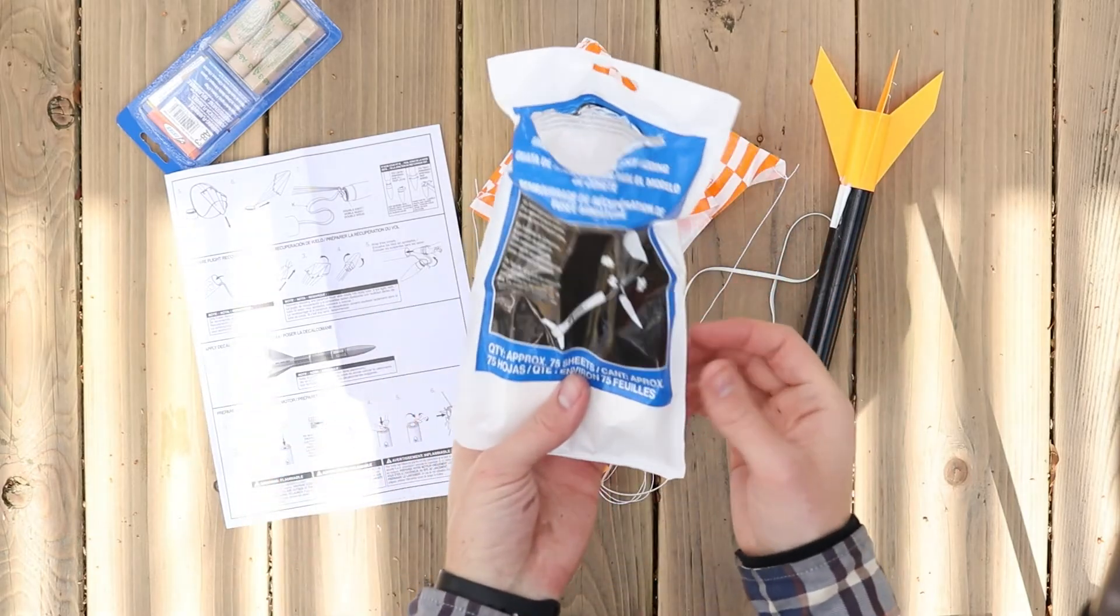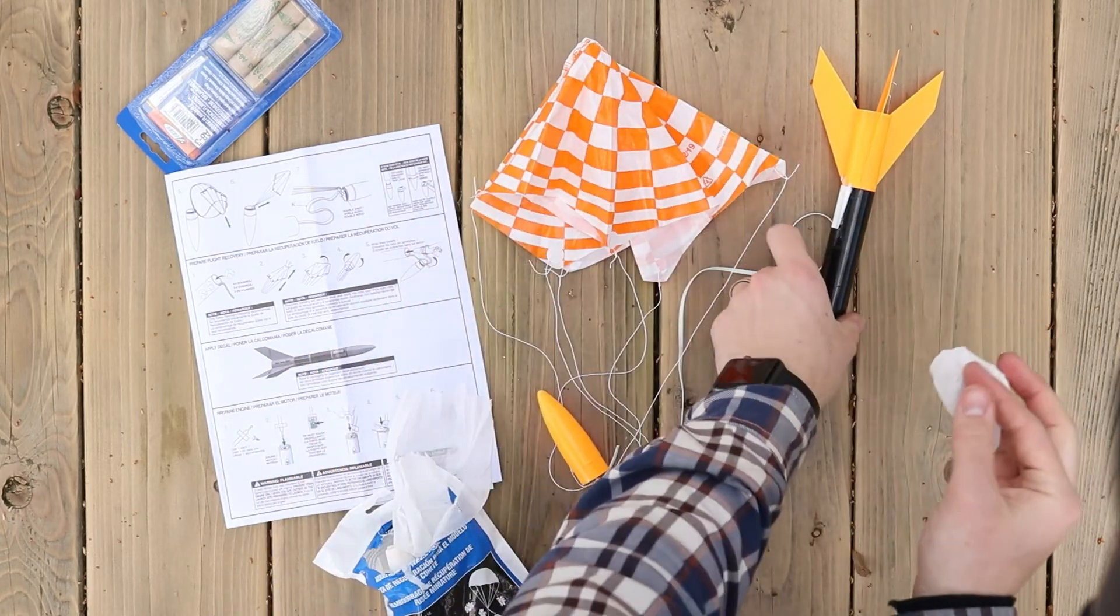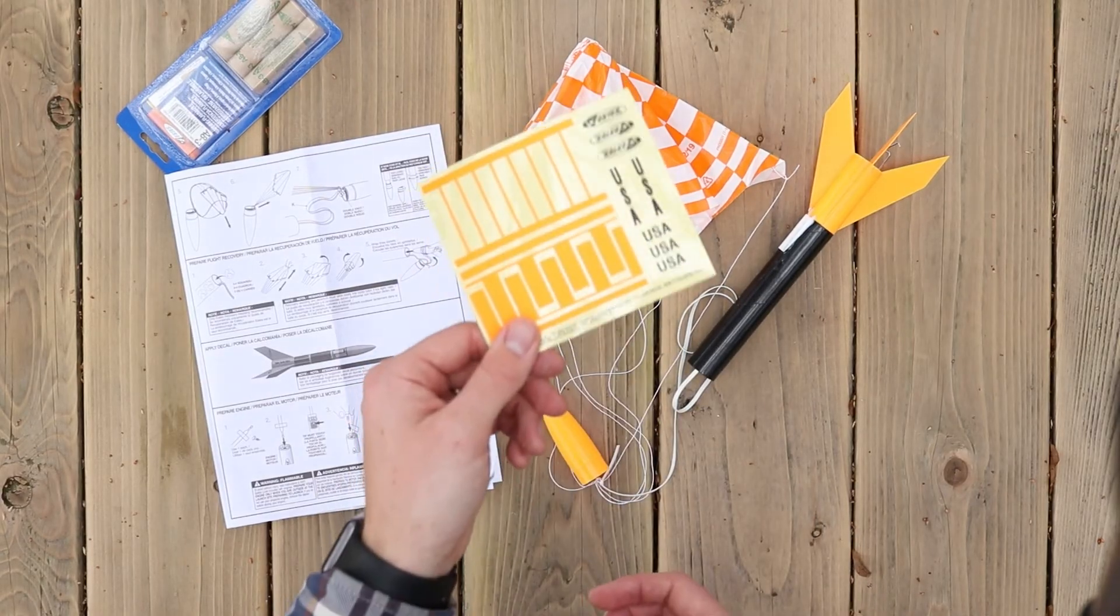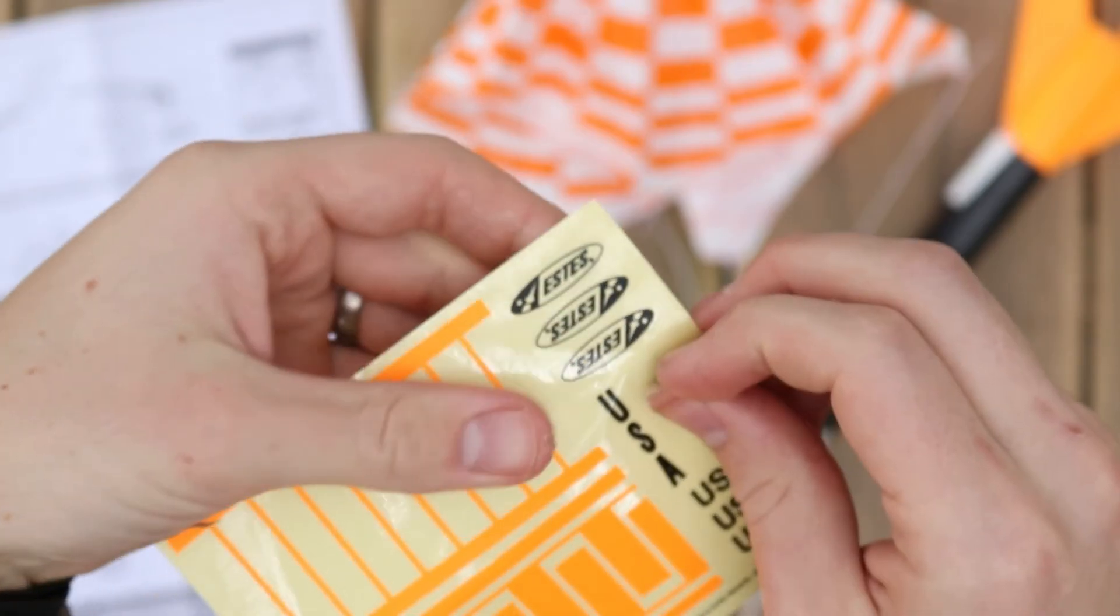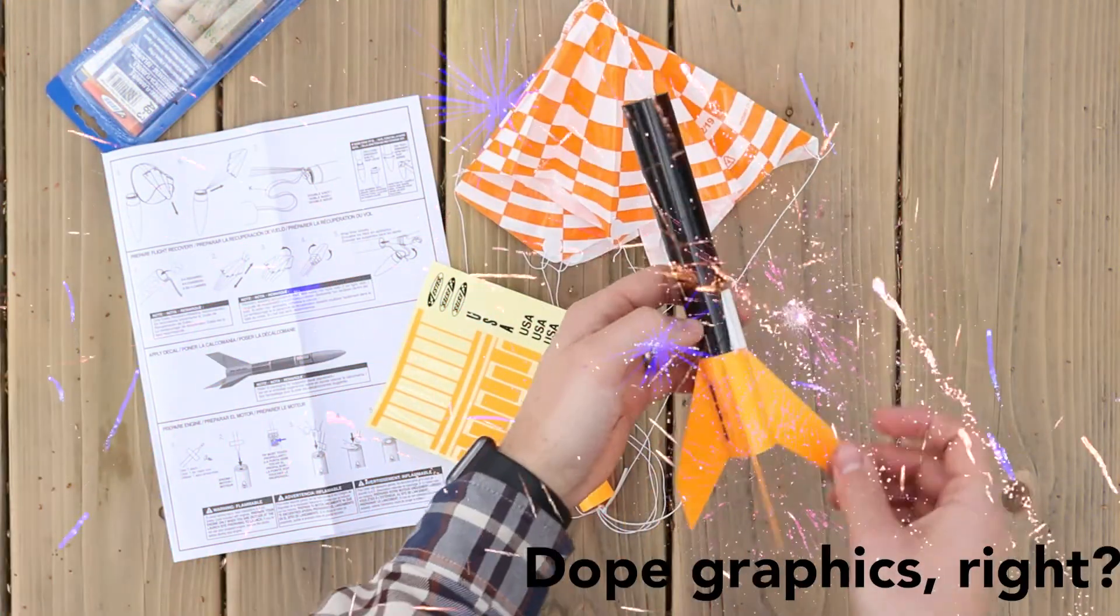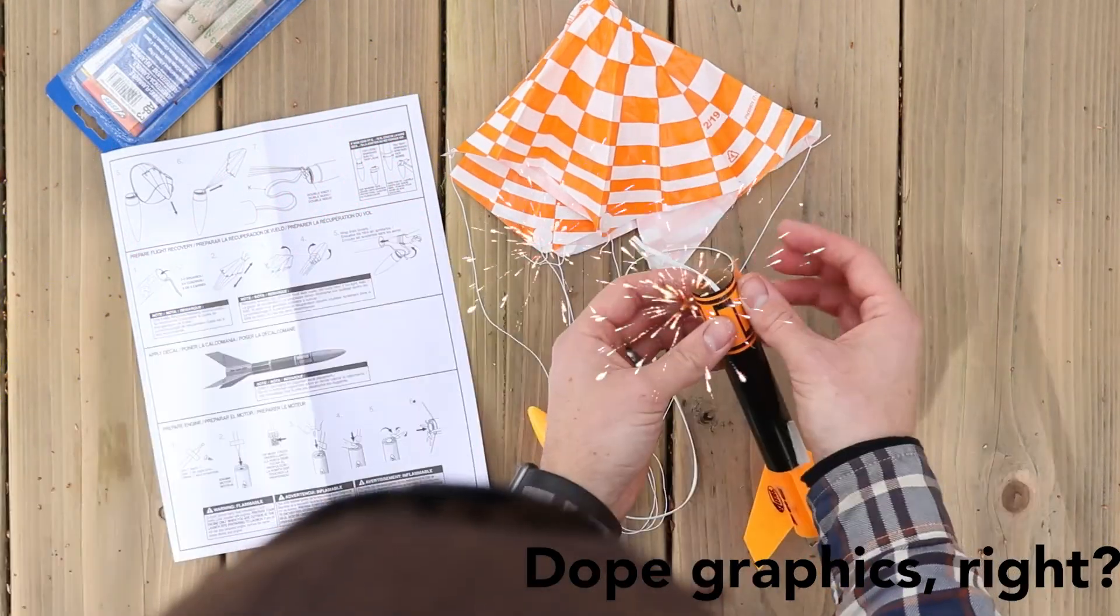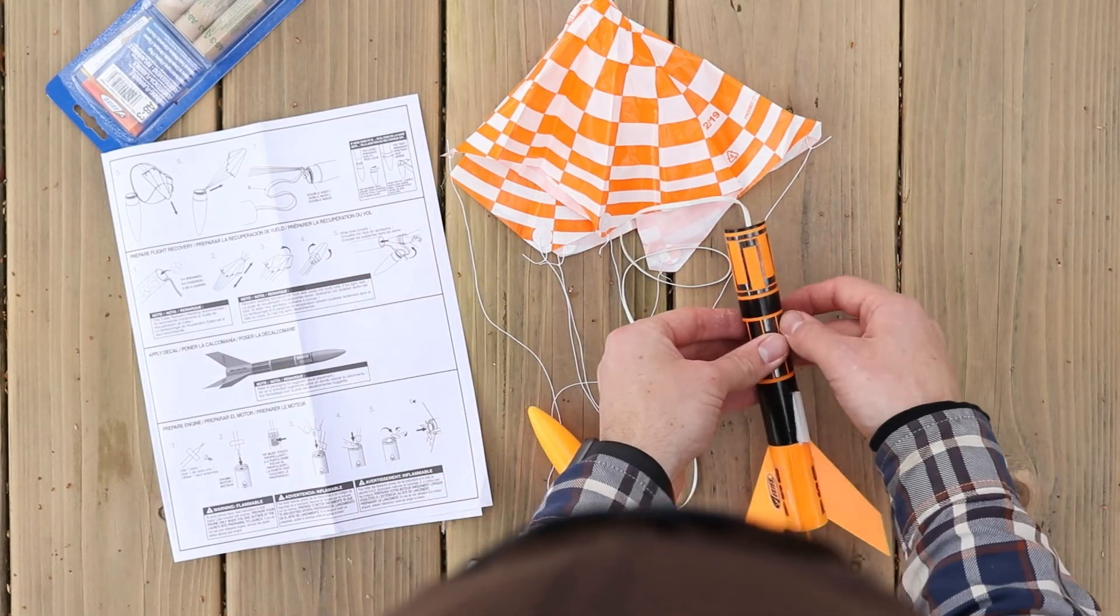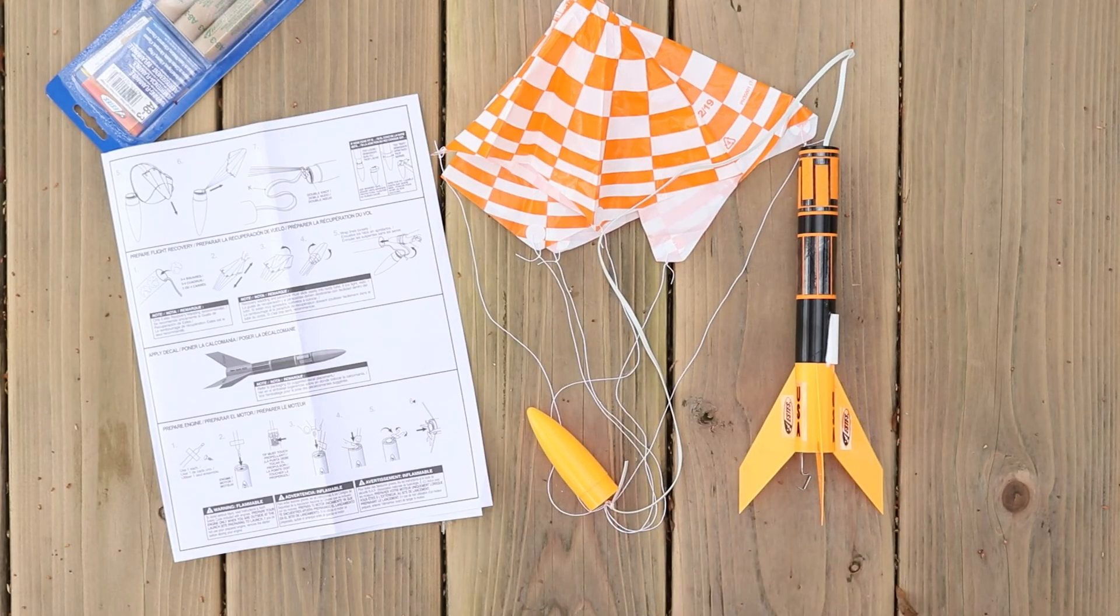If you're going up to launch right away, now's a good time to tear off three to four squares of recovery wadding, lightly crumple them, and insert them into the body tube. I'm not launching today, so I'm not going to do that. But obviously, I'm going to add these stickers. We'll start with the USA stickers. Stickers will actually make your rocket launch higher. That's actually not true, but come on, everyone knows you need to use the stickers. And just like that, the Alpha 3 is ready to launch.